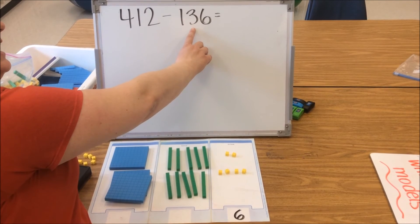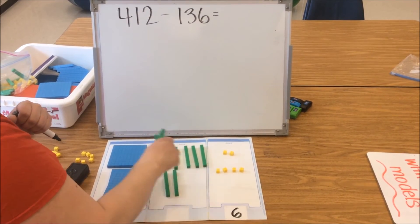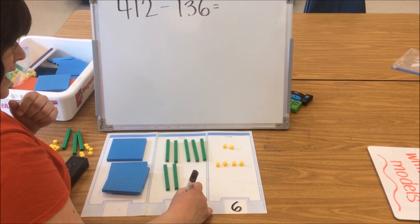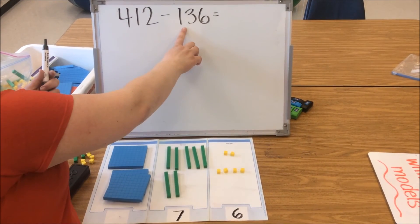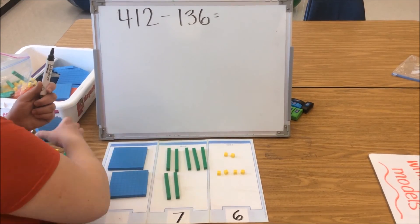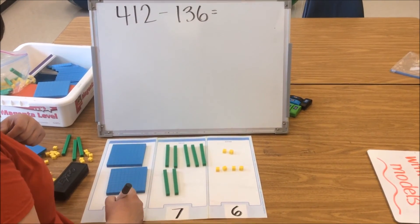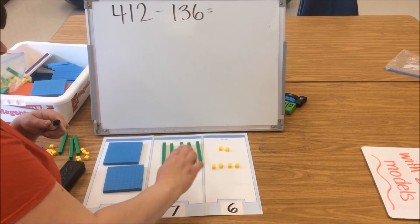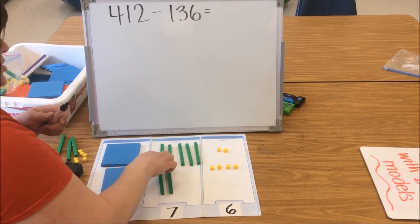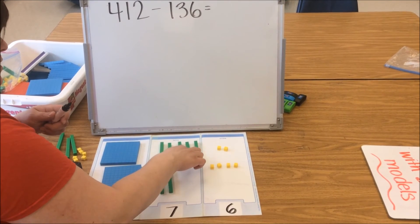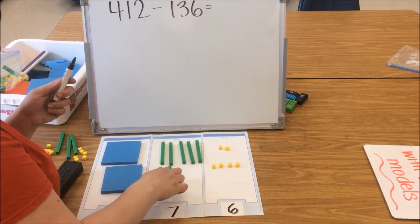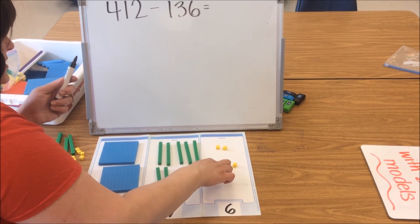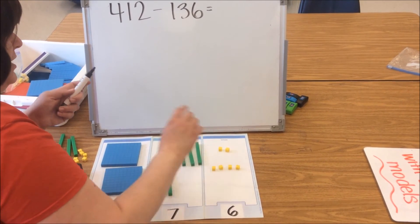I go back to my problem — I can now take away my 3 tens: 1, 2, 3. I count what is remaining and I have 7 tens. I go back to my problem — I need to take away 100. I take that 100 away from the 3 that are remaining and now I have 2 hundreds left. Let's count our model to make sure it matches our answer: 100, 200, 210, 220, 230, 240, 250, 260, 270, 271, 272, 273, 274, 275, 276.